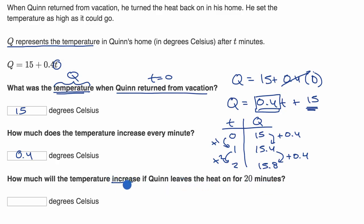If we just want to know what is the temperature after 20 minutes, we would just say, what is Q when T is equal to 20? So it'd be 15 plus 0.4 times 20. 0.4 times 20 is eight. Eight plus 15 is 23. So it's 23 degrees Celsius after 20 minutes.